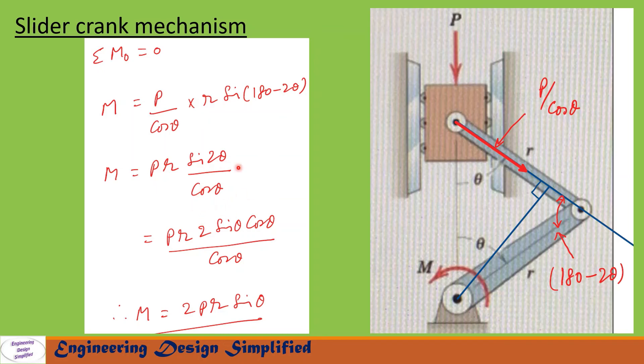After simplifying this, sin 2 theta can be written as 2 sin theta cos theta. This cos theta and this cos theta gets cancelled. After simplifying this we will get M equal to 2Pr sin theta.